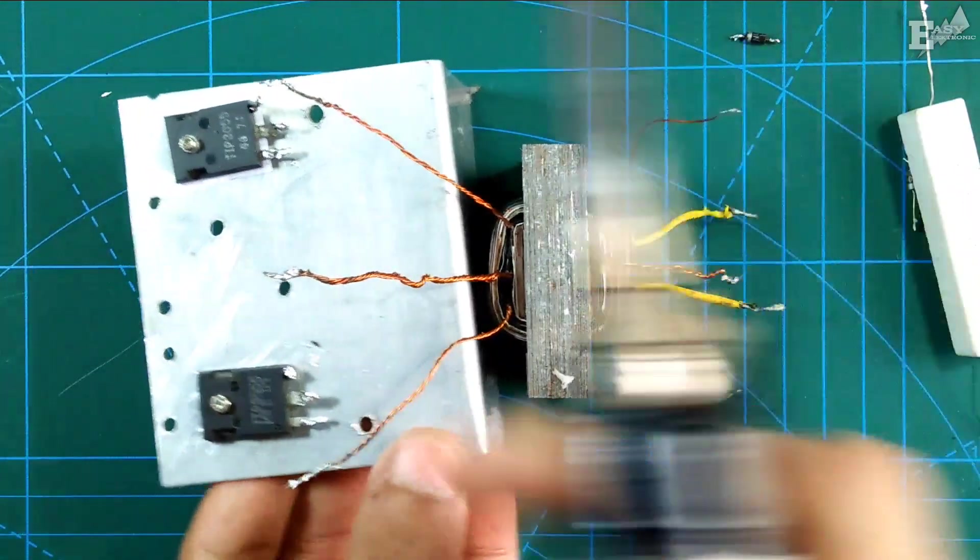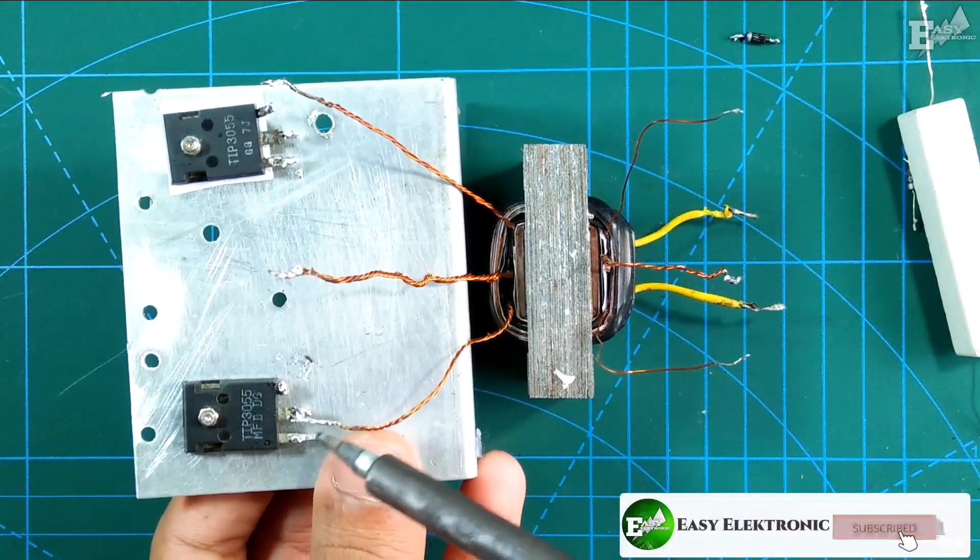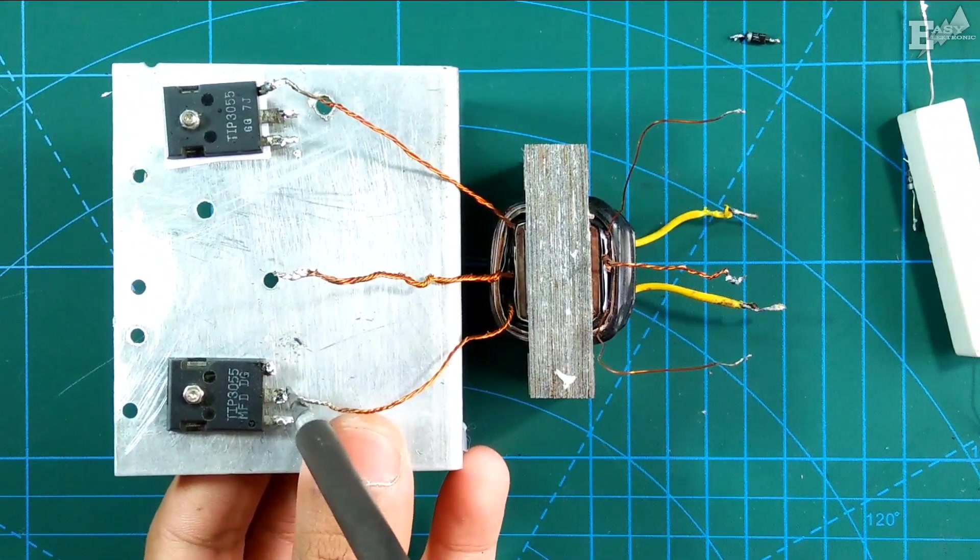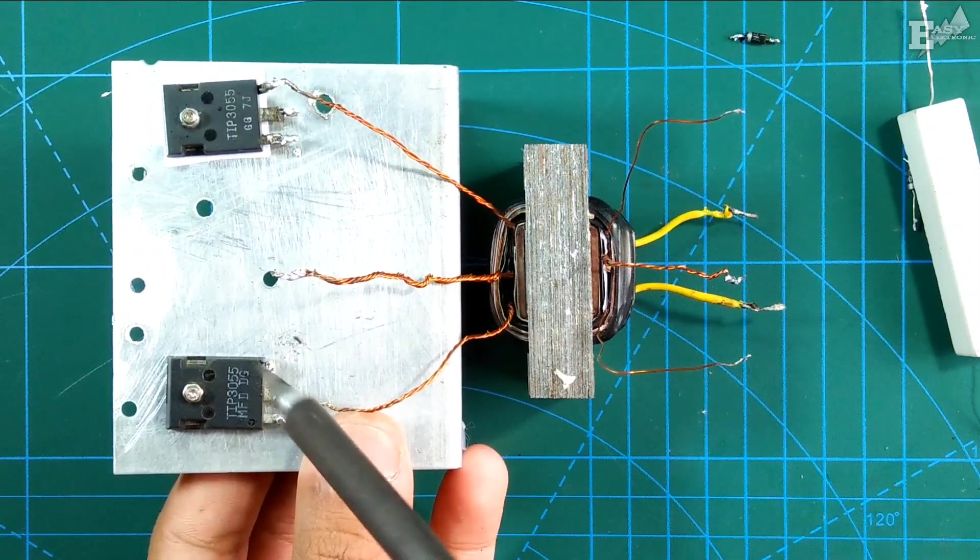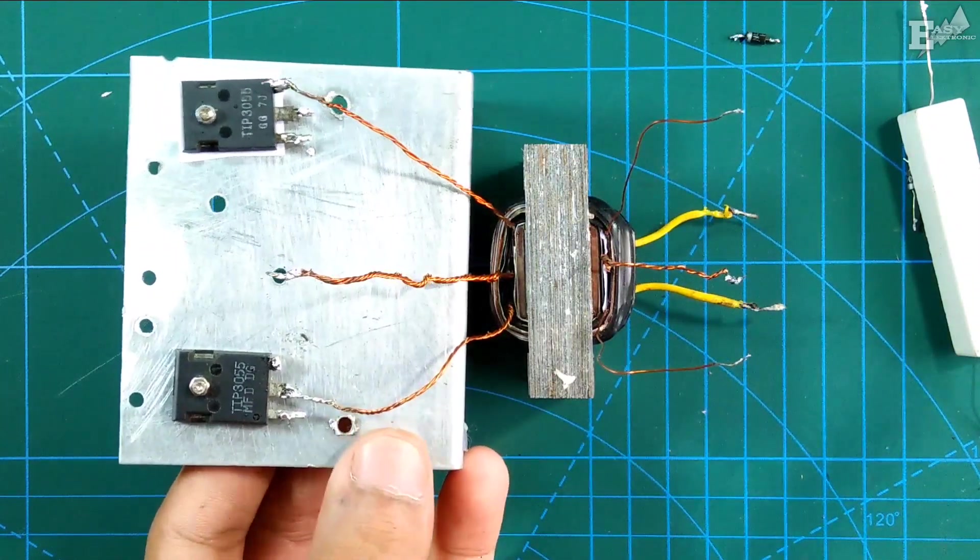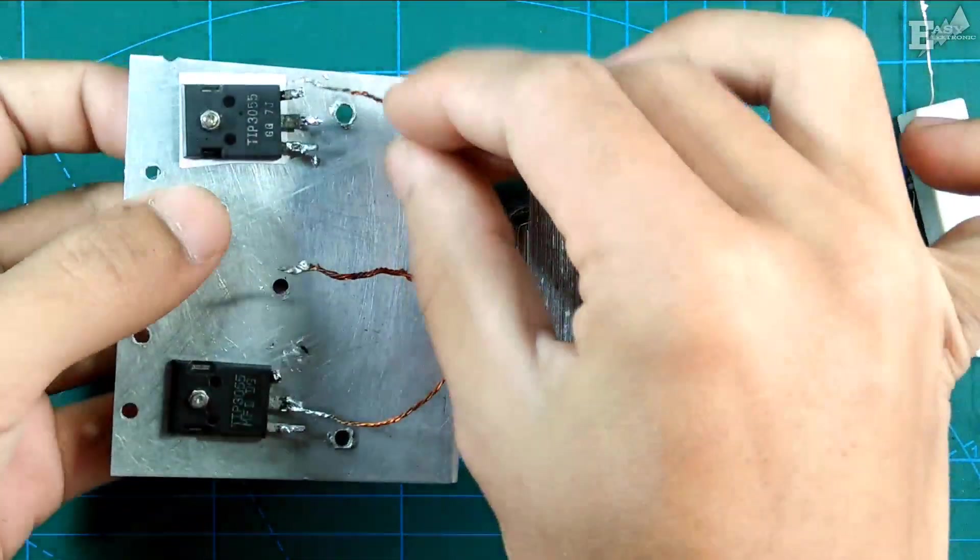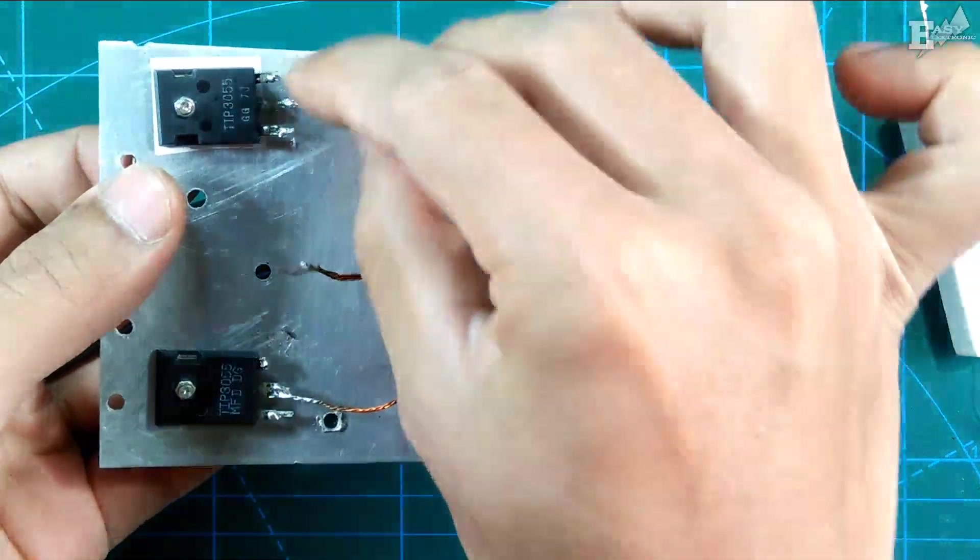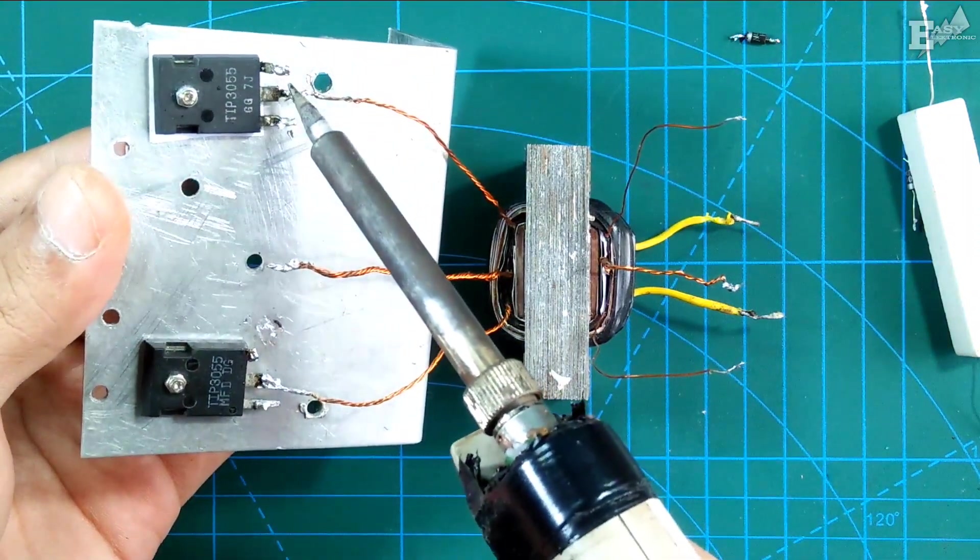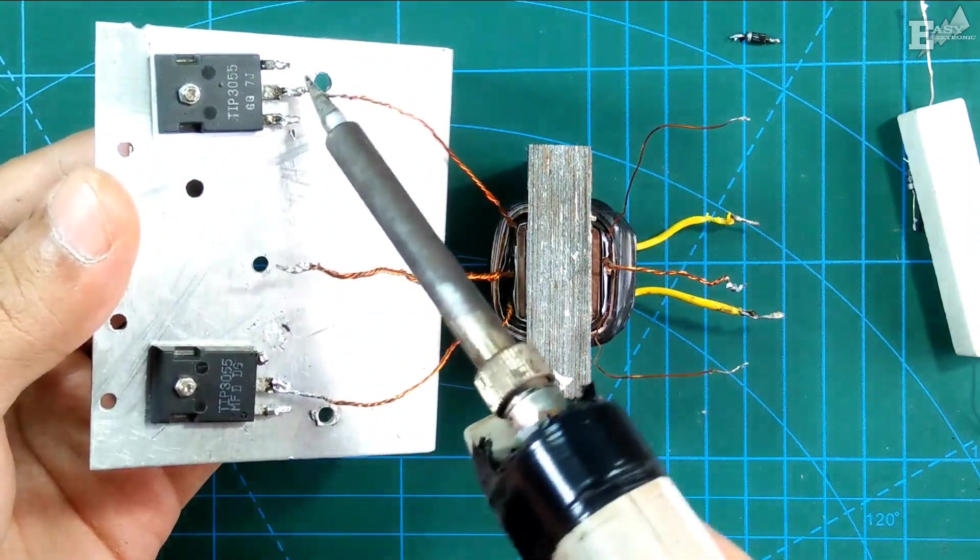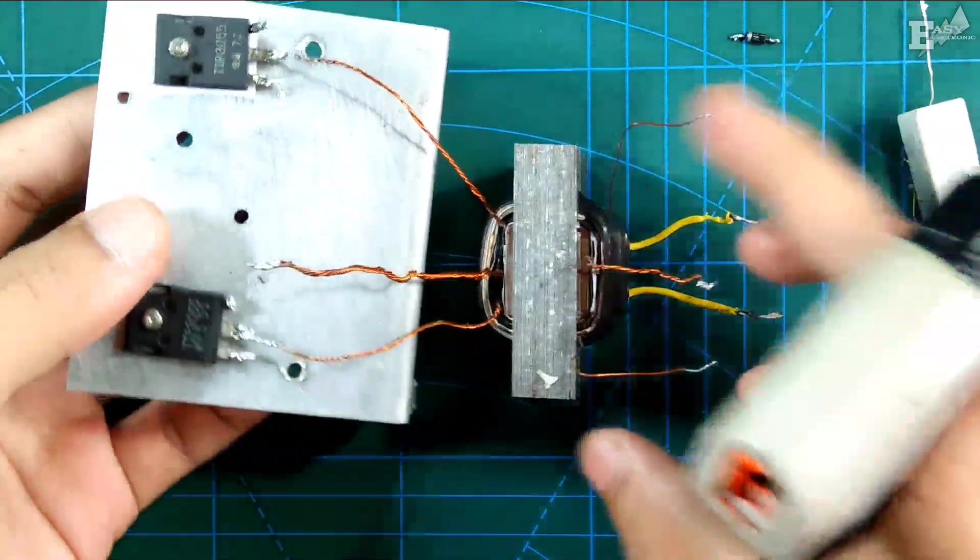So just watch until the end. This is for the end of the primer, going into the collector pin of the first transistor or the one on the side. Then this first primer, the beginning of the primer goes into the collector pin also of the second transistor or the one on the right side.